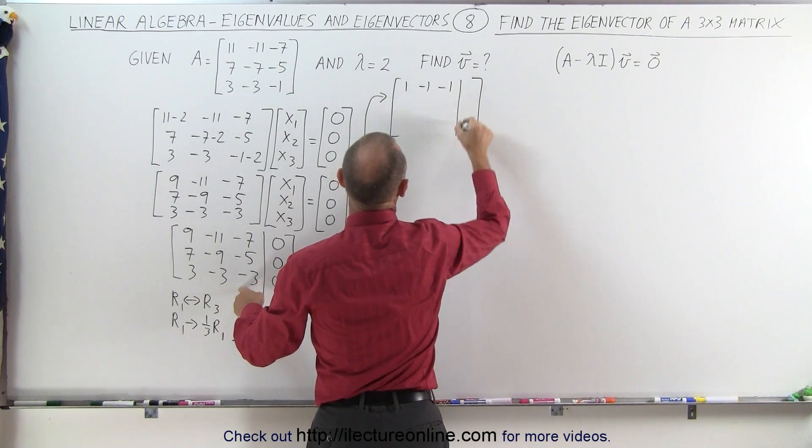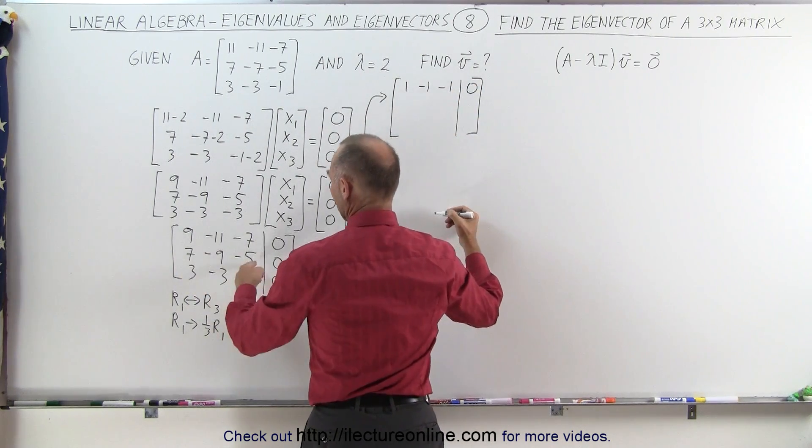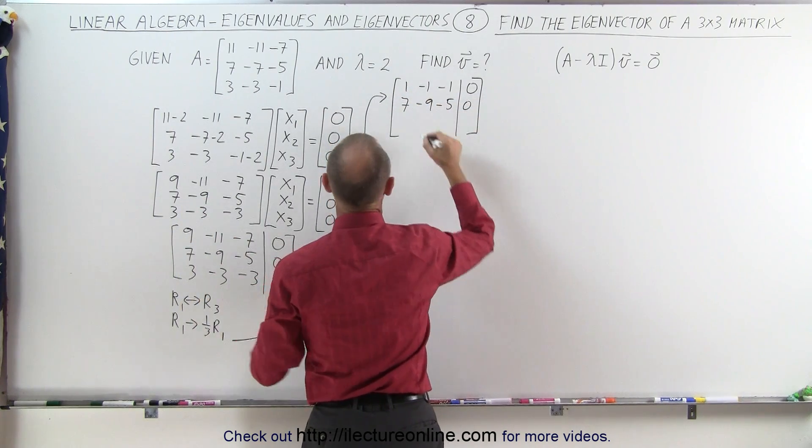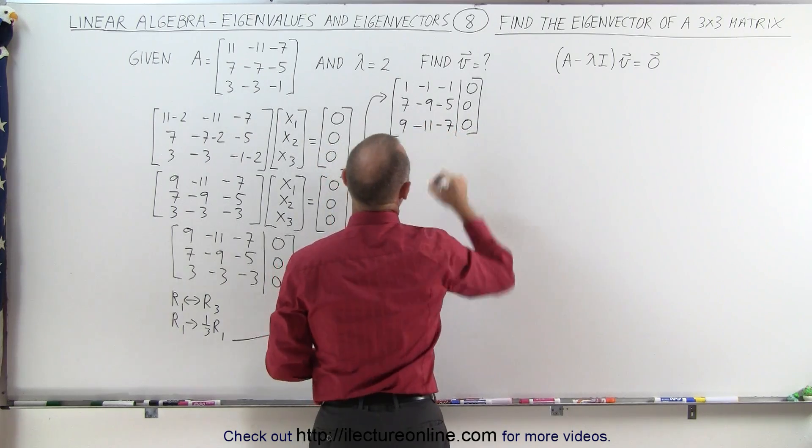The second row doesn't change. 7, minus 5, and 0. And the top row goes to the bottom. 9, and minus 7, and 0.